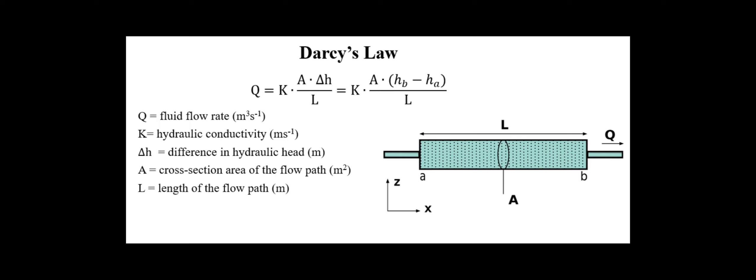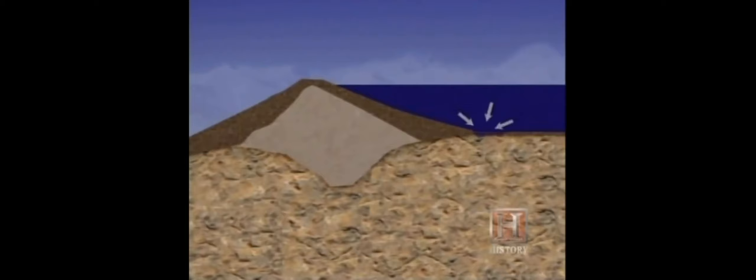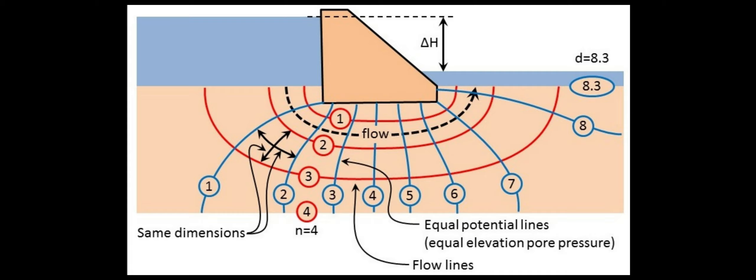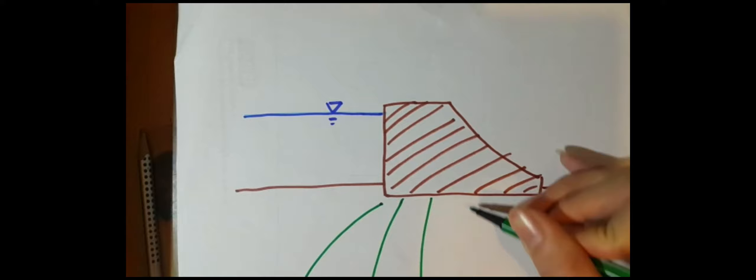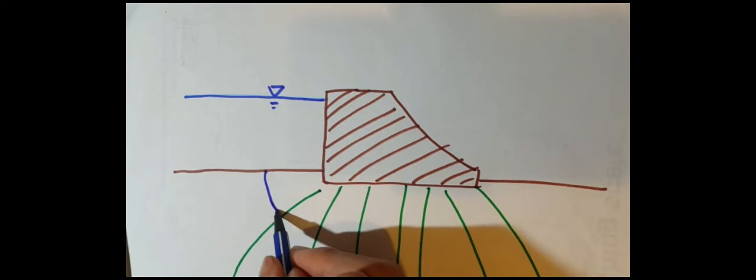A dam will have a higher pressure on the upstream side. This pushes water flow through the soil onto the downstream side, causing erosion under the dam and hydrostatic uplift which will lift up the dam. In the past, engineers would use a flow net diagram to predict water flow within the soil. They first draw lines to connect areas with the same pressure, and the flow path will be perpendicular to them. But nowadays we can use computer models to form these diagrams.